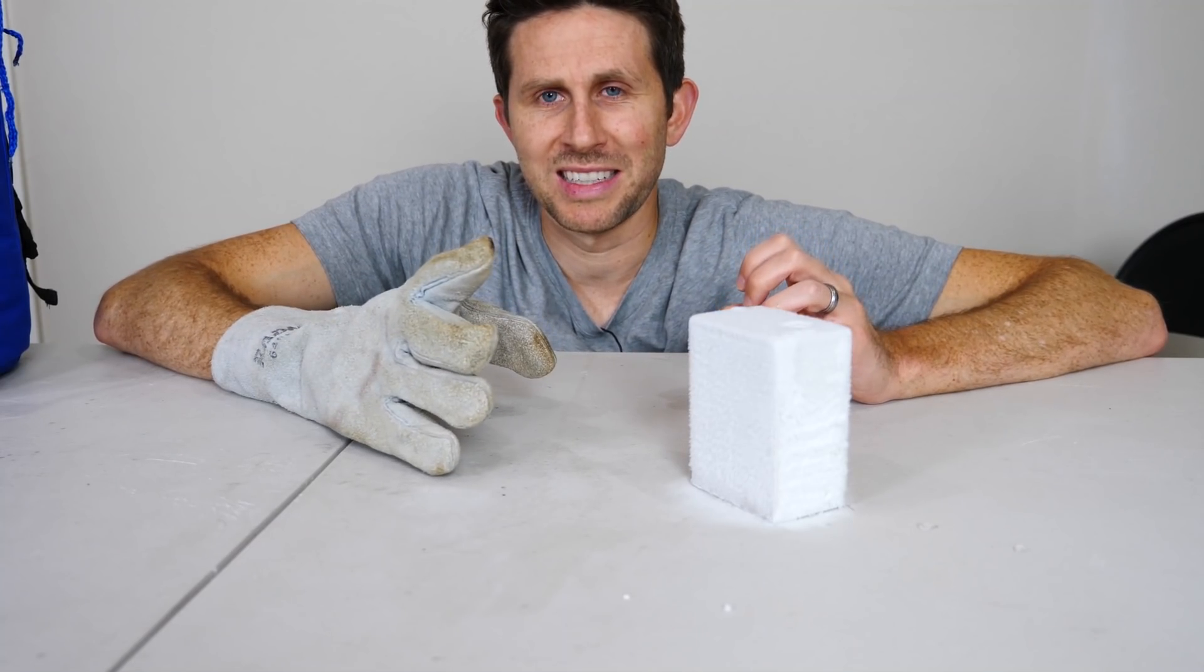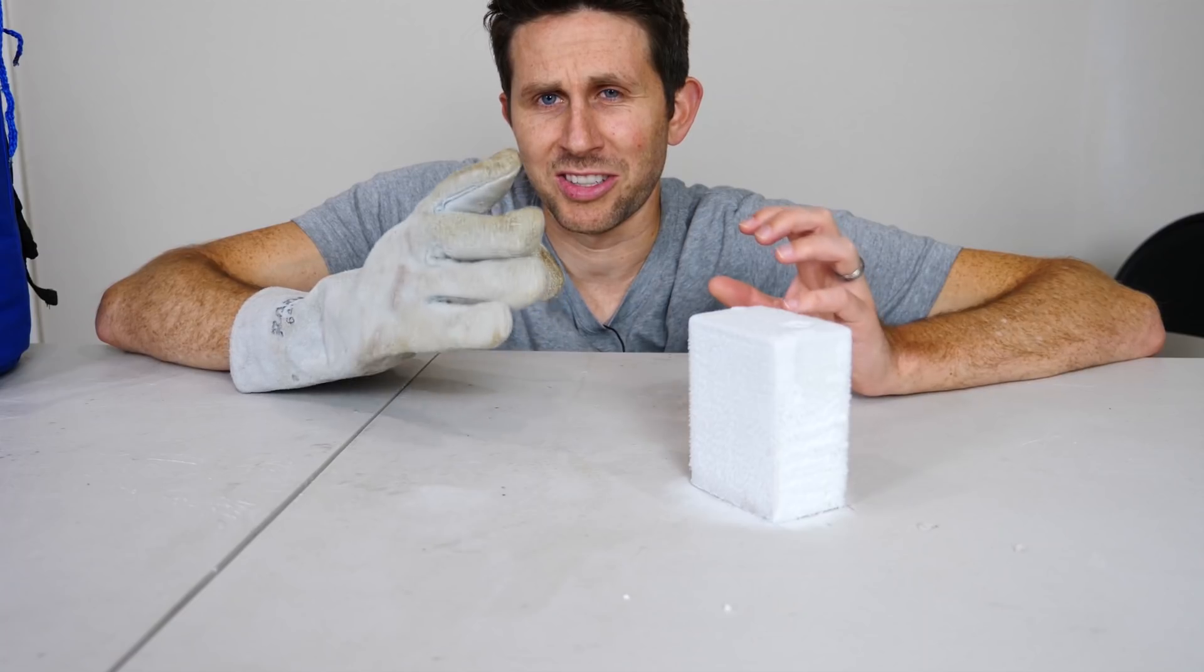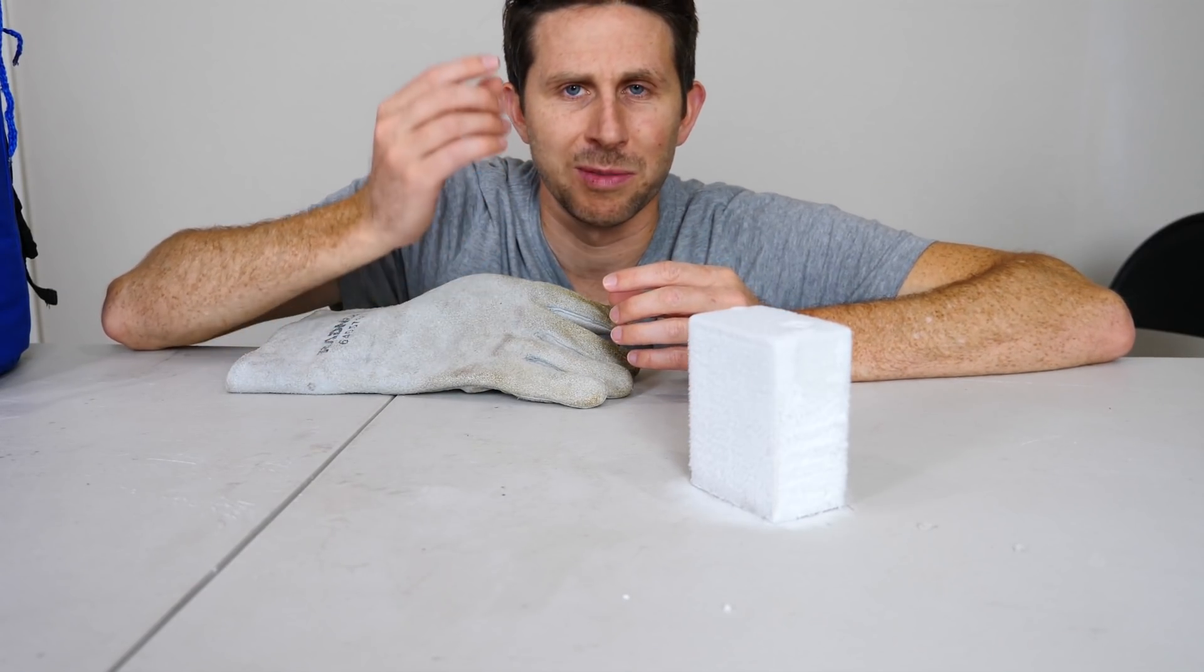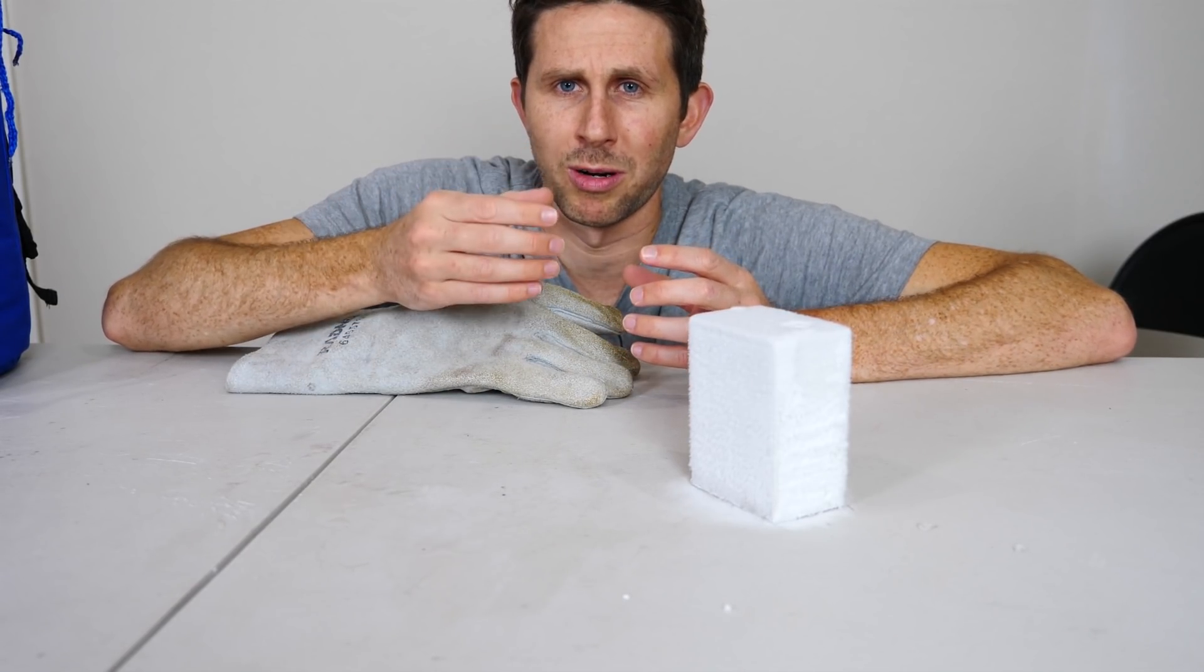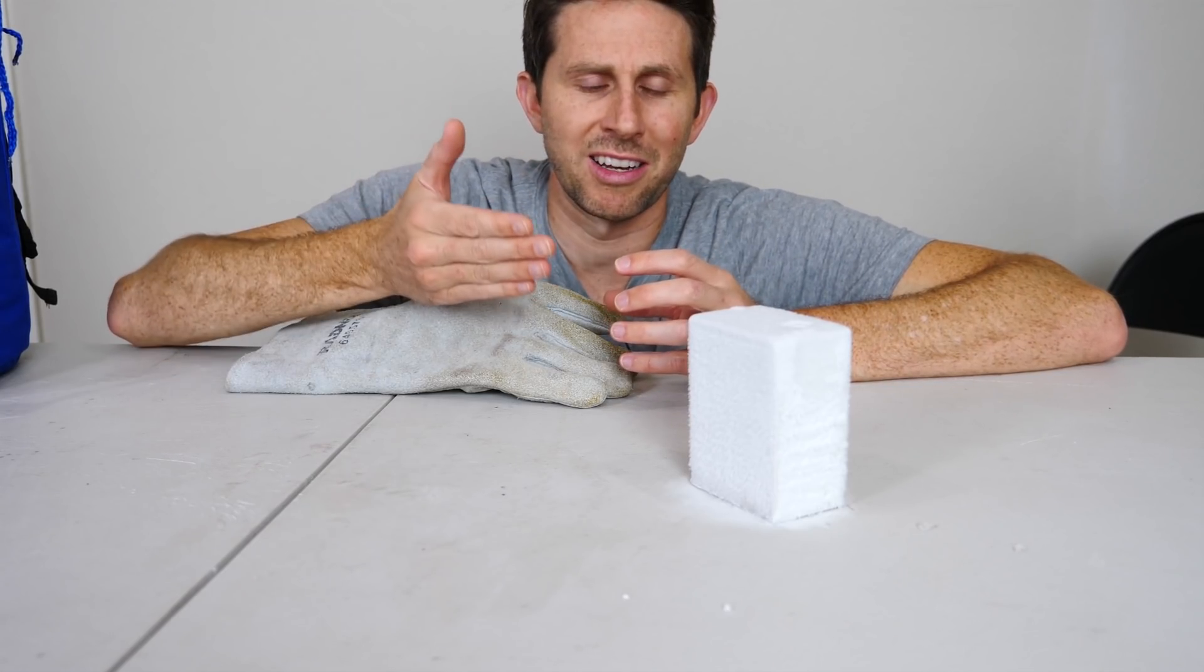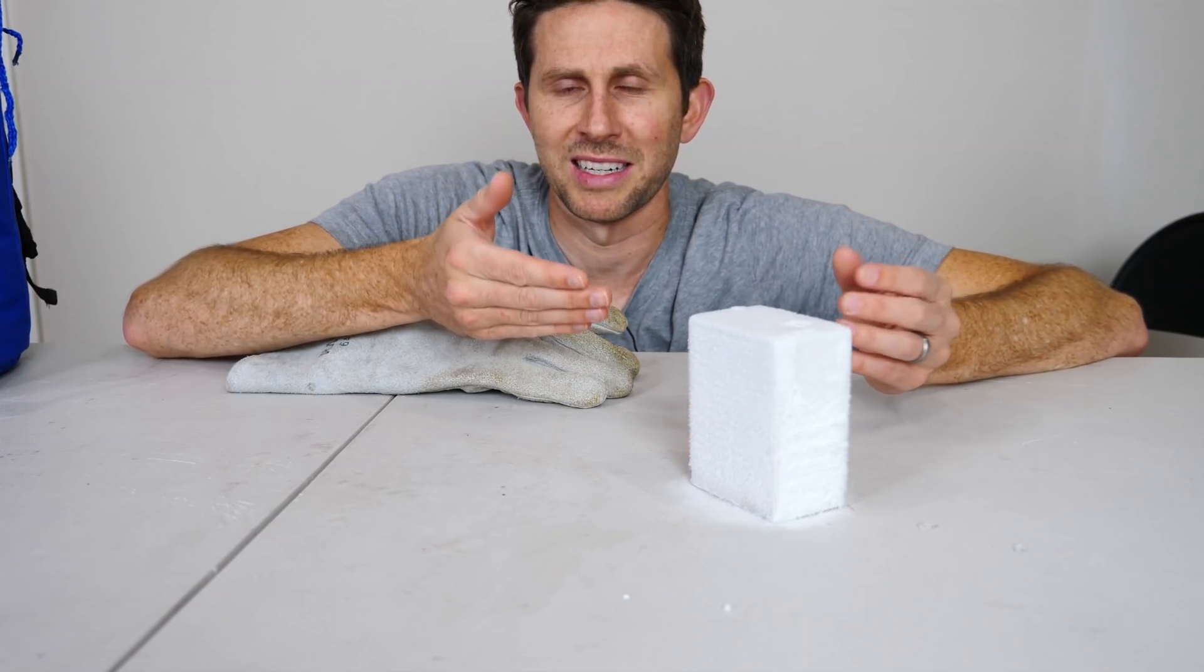So when you cool a magnet down, it actually creates a stronger magnet because the atoms don't have as much energy and so they can actually orient their magnetic fields better when they're colder than when they're warmer. When they're warmer, they vibrate around a lot more and so it's harder to align all the magnetic fields of the atoms in the neodymium magnet.